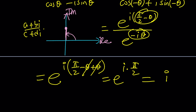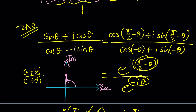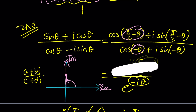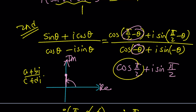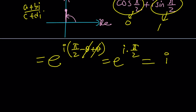So the answer is i one more time. We could also directly subtract the arguments, and that should give us cosine of pi over two plus i times sine of pi over two. Cosine pi over two is cosine 90, which is zero, and sine pi over two is one, giving us i again.